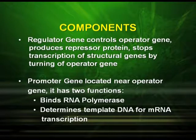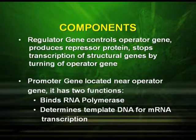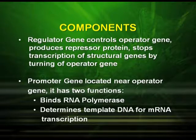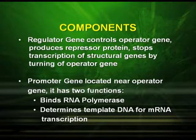Let us see the different functions of each component. The regulator gene controls the operator gene. It produces repressor protein and stops transcription of structural genes by turning off the operator gene. The promoter gene is located near the operator gene and has two functions: it binds RNA polymerase, and it determines the template DNA for mRNA transcription.